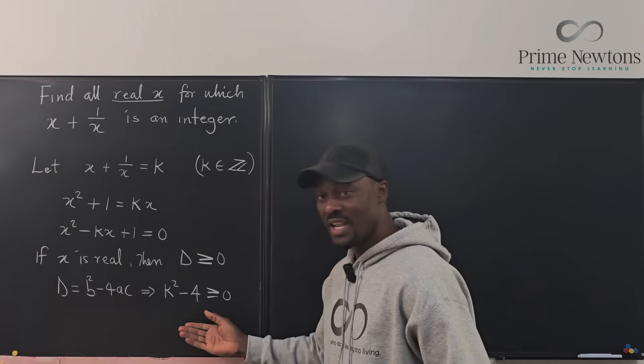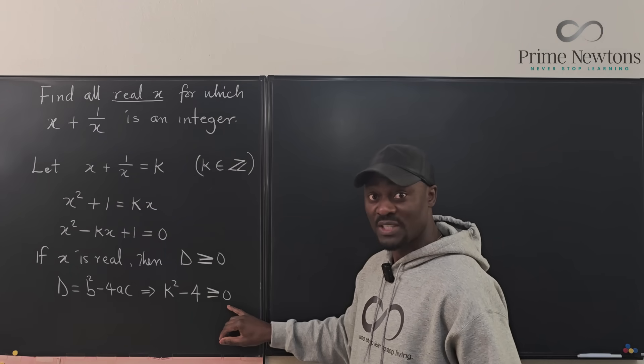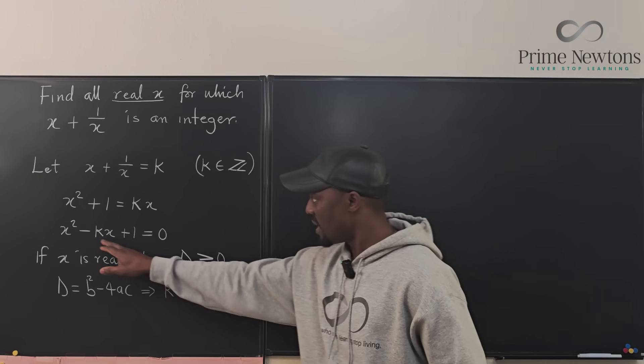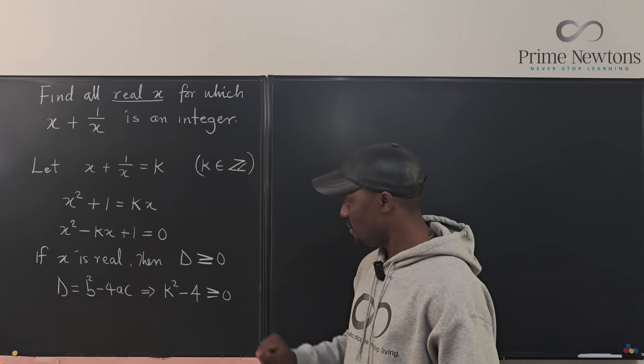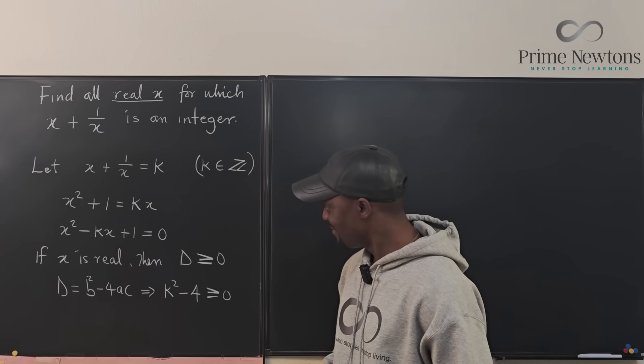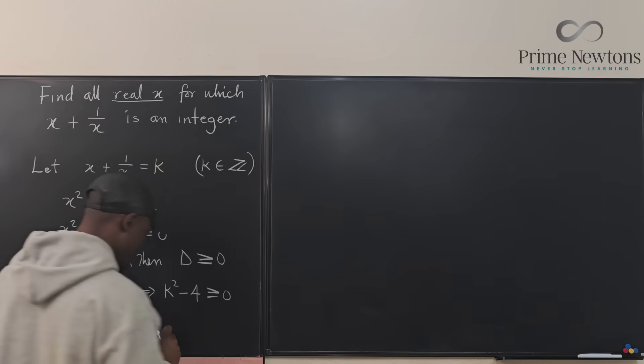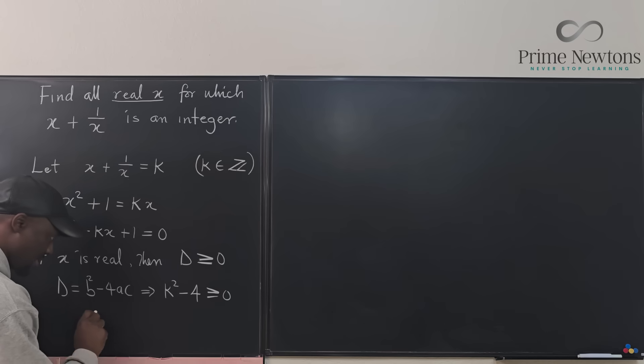So k squared minus 4 is greater than or equal to 0. If d is greater than or equal to 0, that means k squared minus 4 is greater than or equal to 0, which means that k squared is greater than or equal to 4.